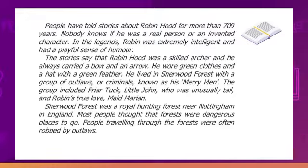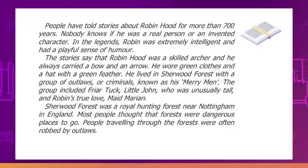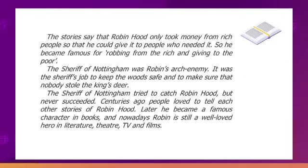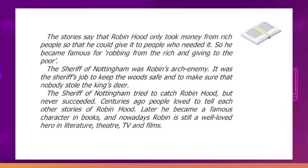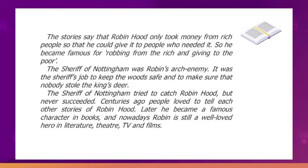Sherwood Forest was a royal hunting forest near Nottingham in England. Most people thought that forests were dangerous places. People traveling through the forest were often robbed by outlaws. The stories say that Robin Hood only took money from rich people so that he could give it to people who needed it. So he became famous for robbing from the rich and giving to the poor. The Sheriff of Nottingham was Robin's arch-enemy. It was the sheriff's job to keep the woods safe and make sure nobody stole the king's deer. The Sheriff of Nottingham tried to catch Robin Hood but never succeeded.